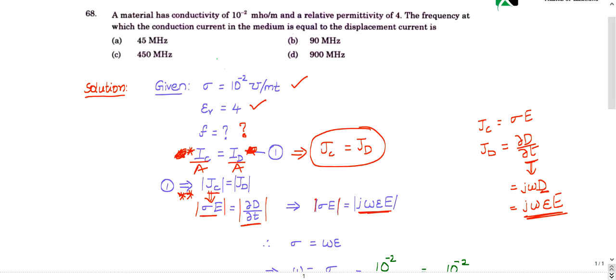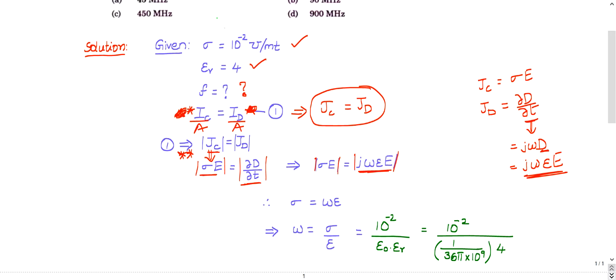Take the magnitudes on both sides. After taking magnitudes on both sides, this j is the imaginary quantity, imaginary part. That j will go. So finally, e and e will get cancelled. So what you are going to get is sigma equal to omega epsilon.